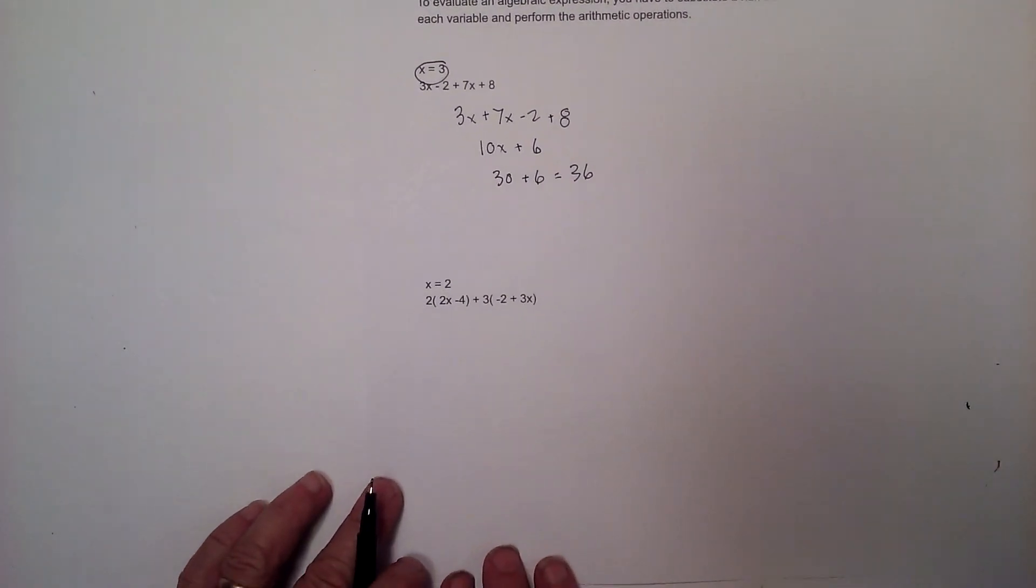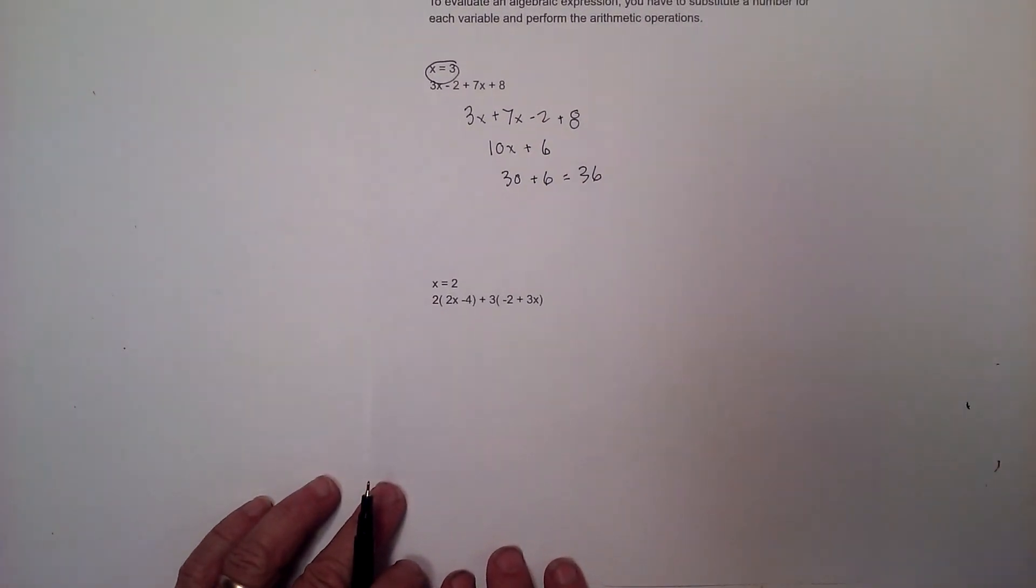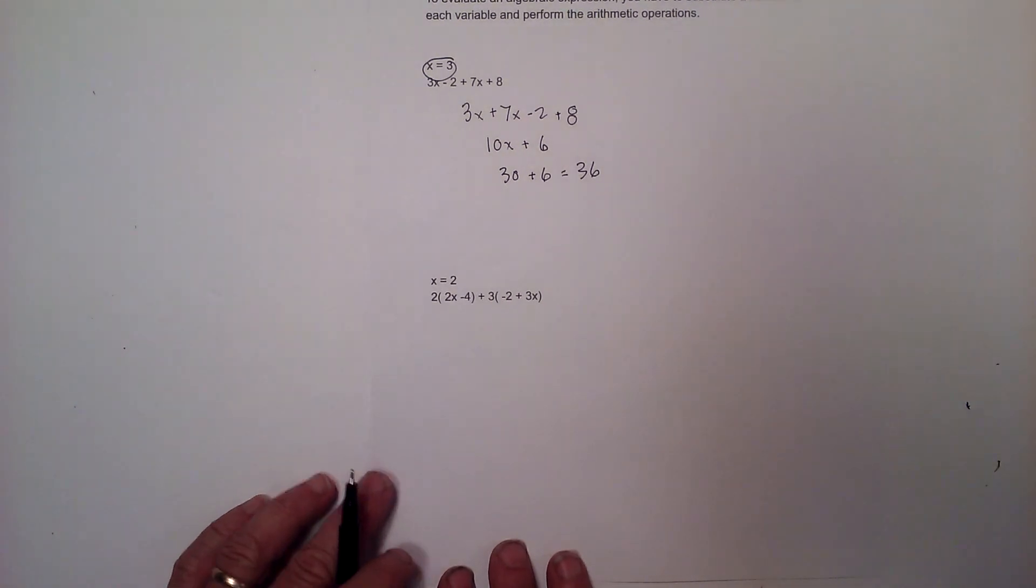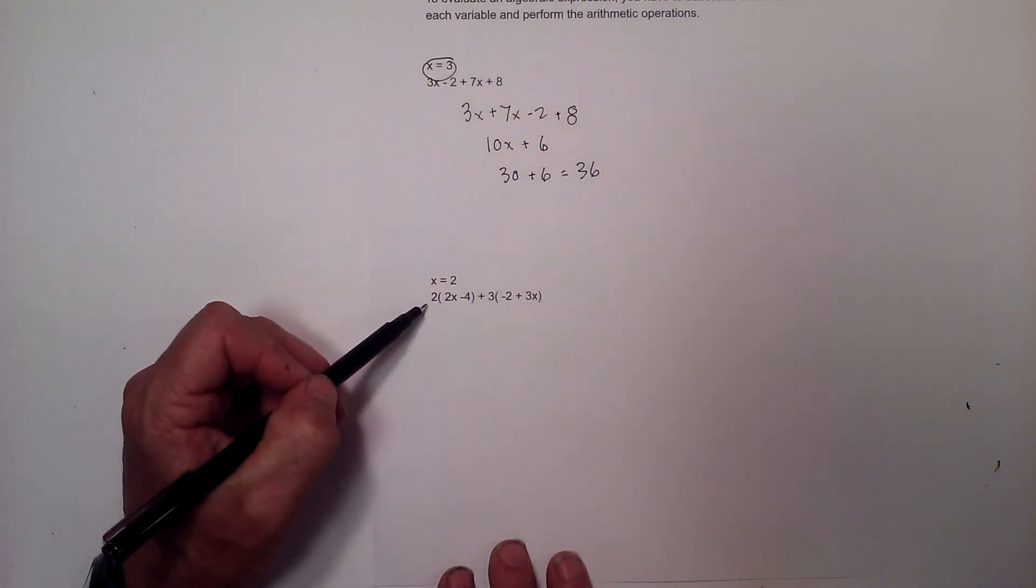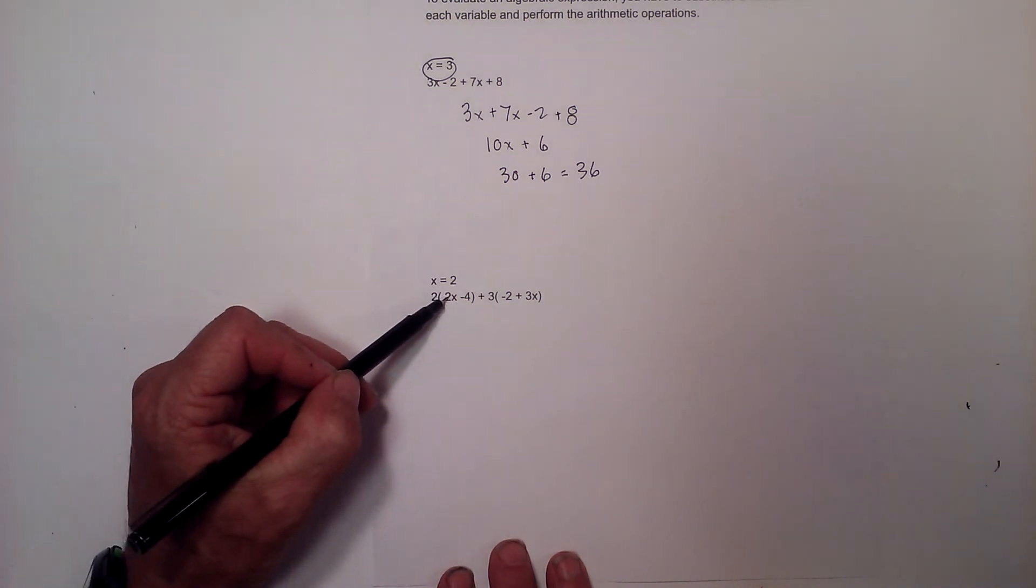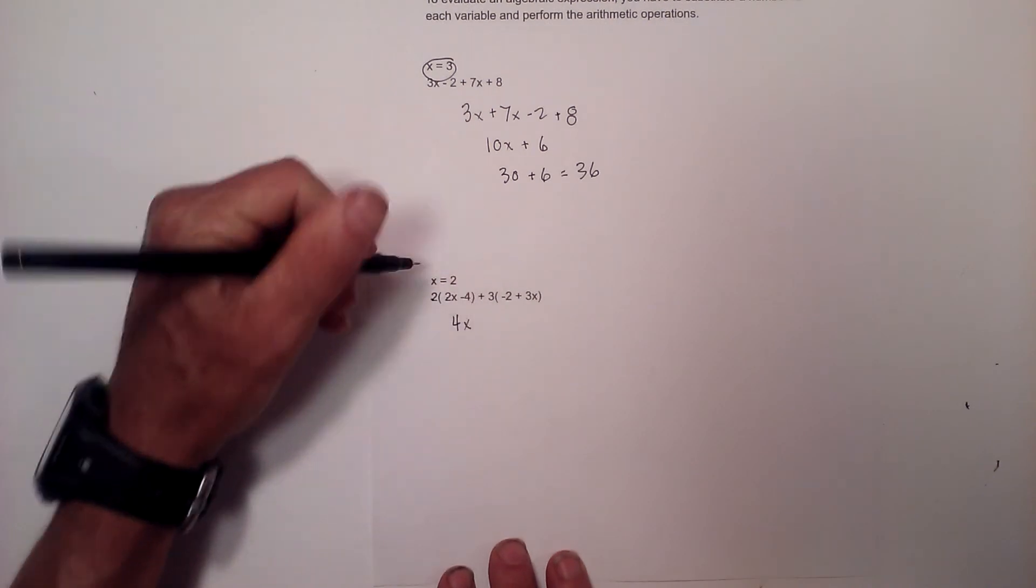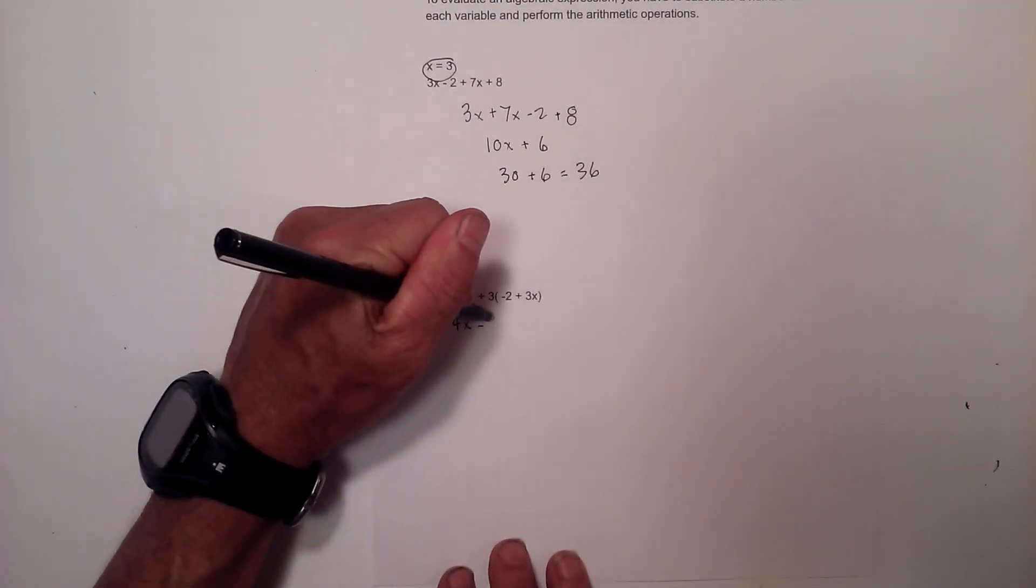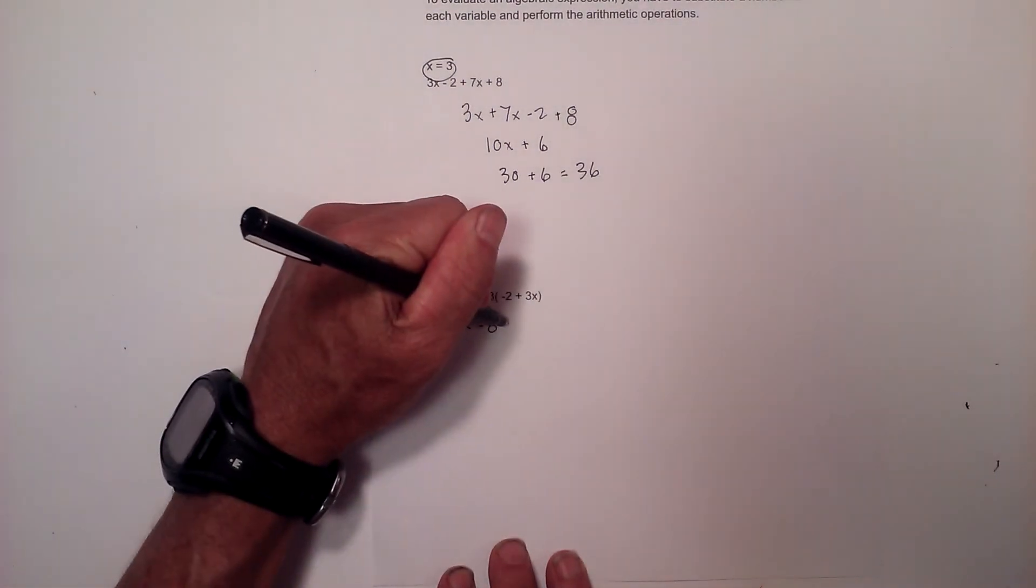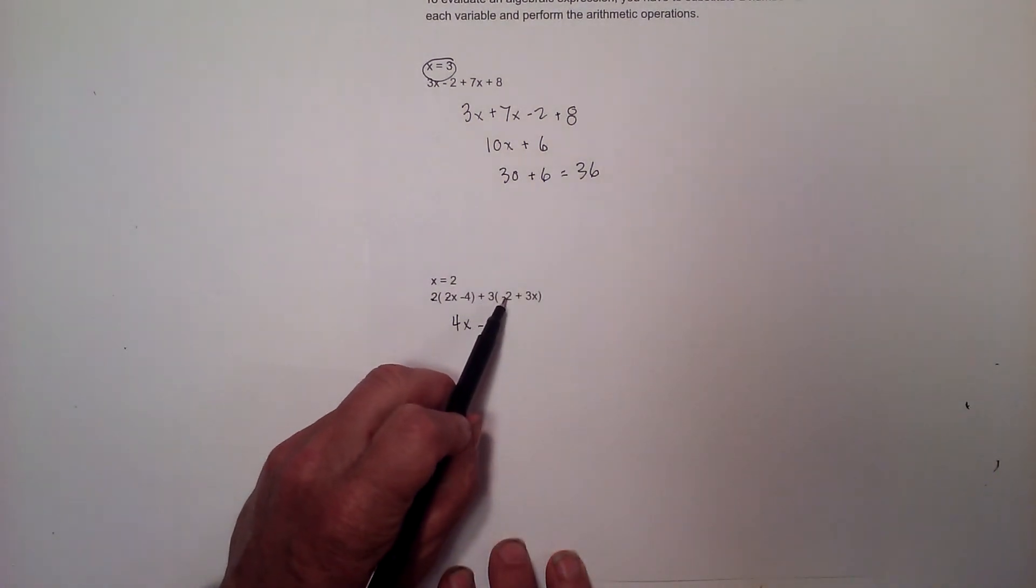I'm going to work one more example, and this is one in which you have to distribute. First, I need to distribute the 2. When you distribute, it means you multiply what's on the outside by what's on the inside: 2 times 2x is 4x, 2 times negative 4 is negative 8.